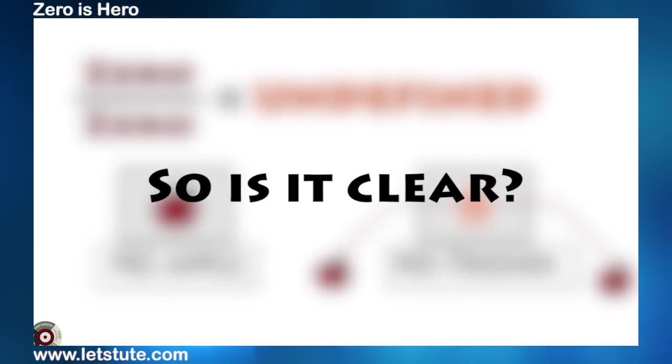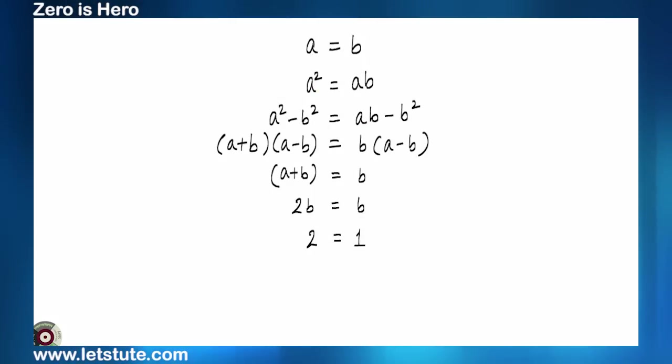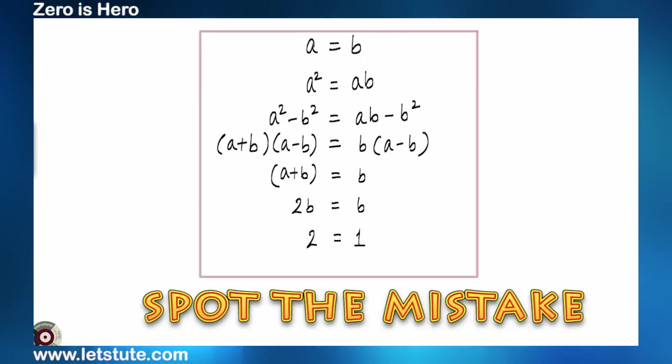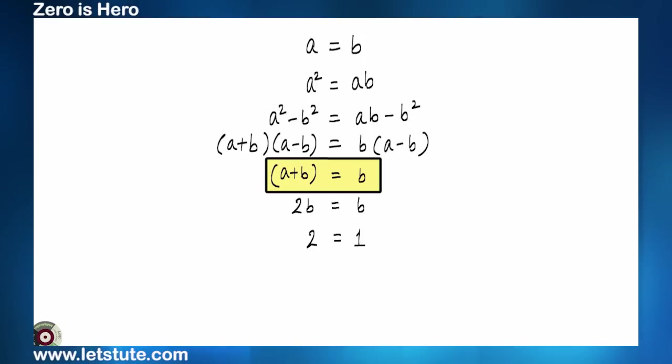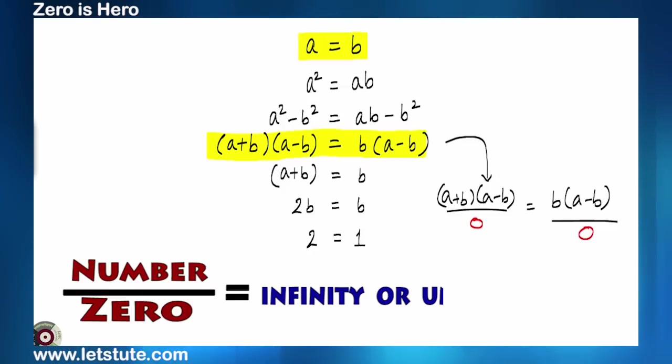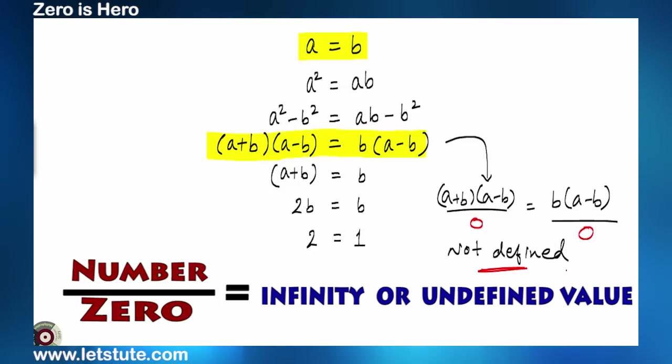So, is it clear? I have a question with which you may be familiar. You have to only spot the mistake. So, did you find the mistake? In the fifth line, we are left with a plus b is equal to b. This means to remove a minus b, we have divided both sides by a minus b, right? But we know that a is equal to b. This means a minus b should be 0. And as we just saw that division by 0 is not defined.